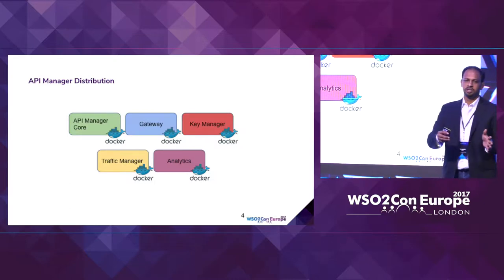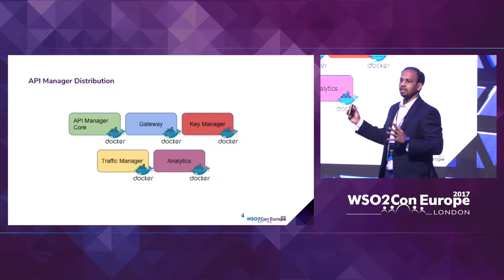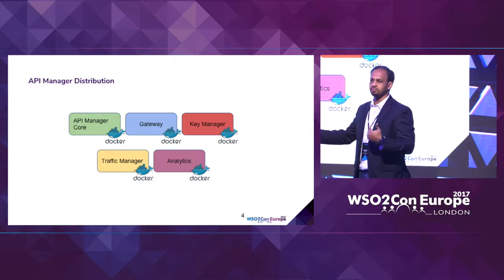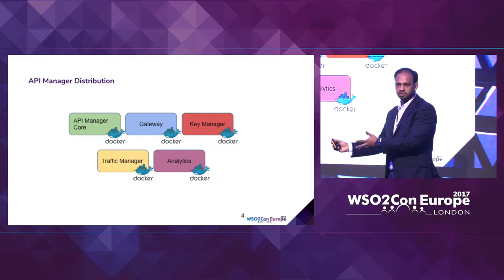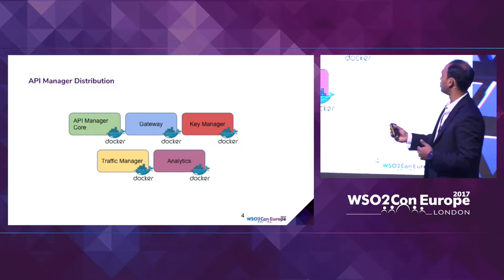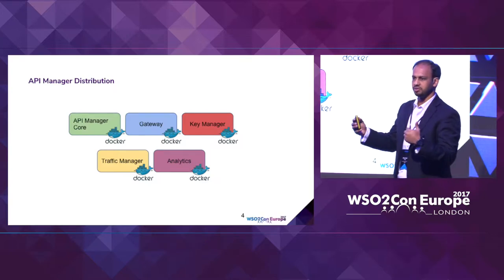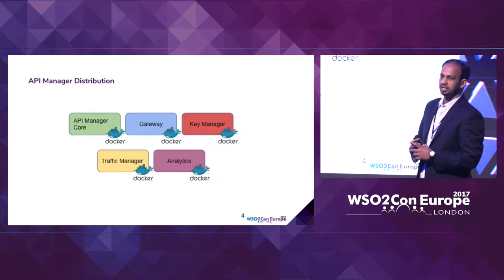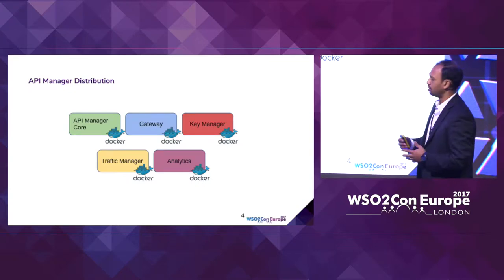Then comes the API gateway, which is the proxy that sits alongside your microservices and gives you security, rate limiting, and all those gateway aspects — it is being redesigned from scratch to suit the microservices world. Key management is a set of microservices exposing the security aspects of API management: OAuth services, SCIM, user provisioning services, and OpenID Connect services, all grouped into a component called key manager. The traffic manager handles rate limiting. Analytics — real-time and batch — are grouped into a separate collection of microservices hosted in a separate runtime.